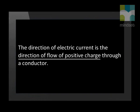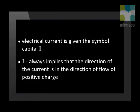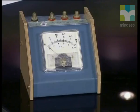The direction of electric current is the direction of flow of positive charge through a conductor. Note that electric current is given the symbol capital I. Capital I always implies that the direction of the current is in the direction of flow of positive charge. We measure electric current with an instrument called an ammeter. The unit of current is the ampere, which has the symbol capital A.